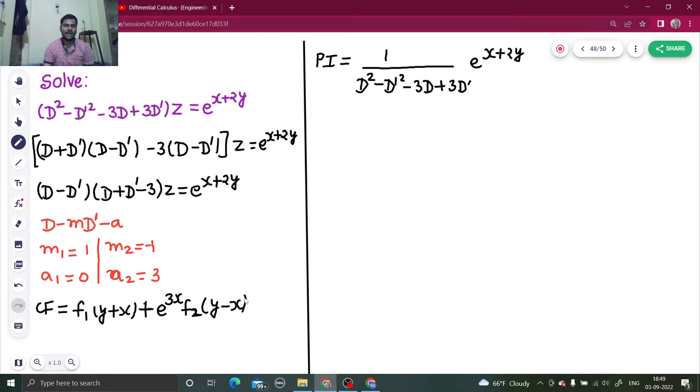First of all I will just check whether I am putting a as 1 and b as 2. I am getting denominator as 0 or not. So this will be 1 minus 4 minus 3 plus 6. 7 minus 7 which is 0. Because it is coming as 0, it is a case of failure.